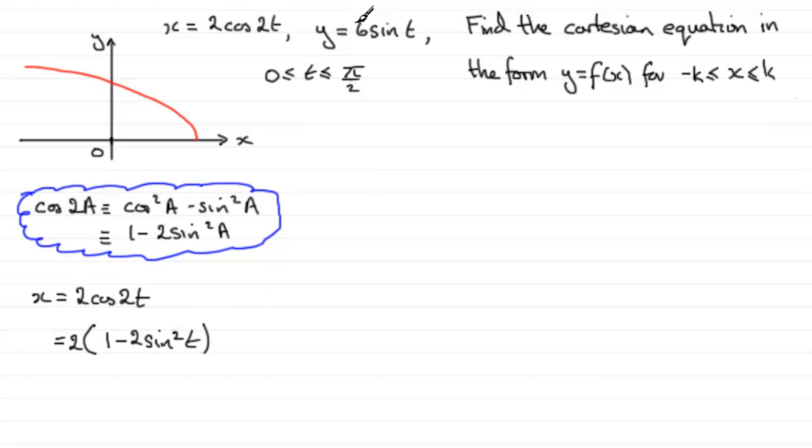So we can turn to our equation up here where we see that y equals 6sin t. And we can see that sin²t must be equal to y divided by 6. And we can substitute this in here. We can say that this is 2 then multiplied by 1 minus 2 times y over 6 all squared. So just need to expand this out.